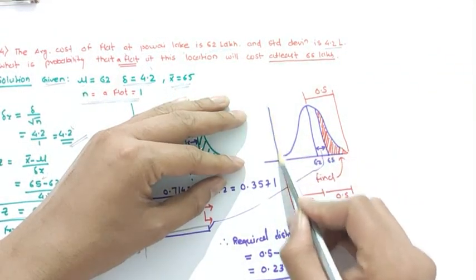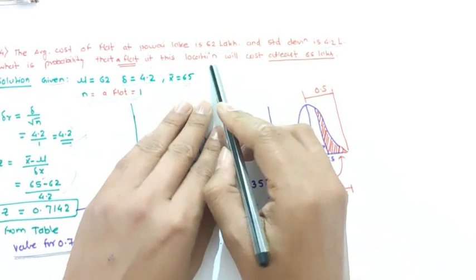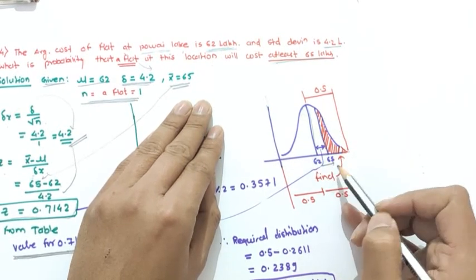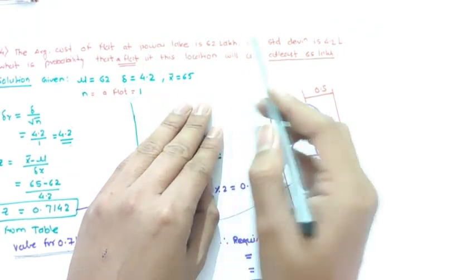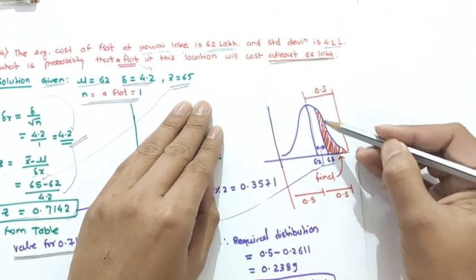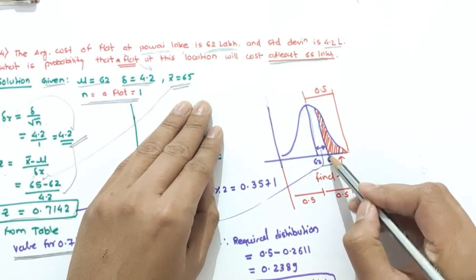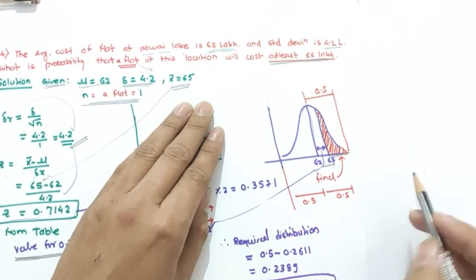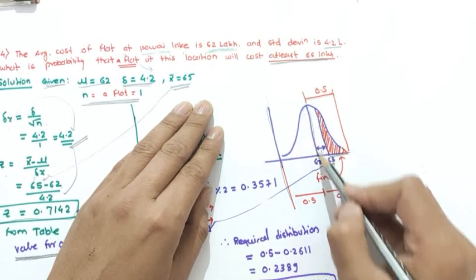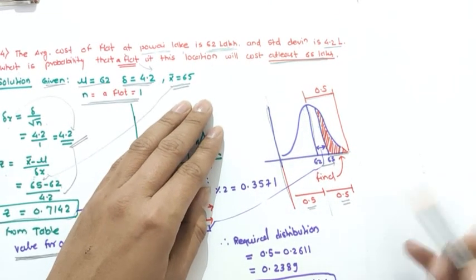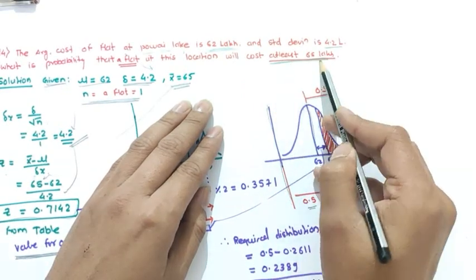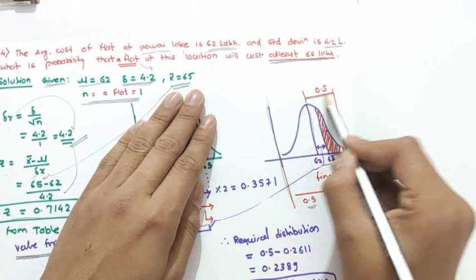In the normal distribution curve, the mean is 62 and the value 65 is to the right. 'At least 65 lakh' means 65 and more — that is the red shaded tail area to the right. The total right half value is 0.5, and the area between the mean and 65 (from the z-table) is 0.2611.